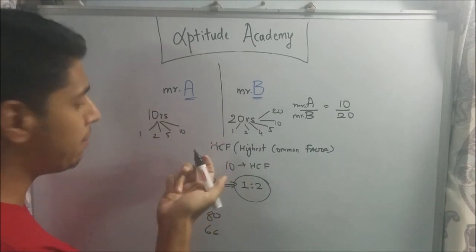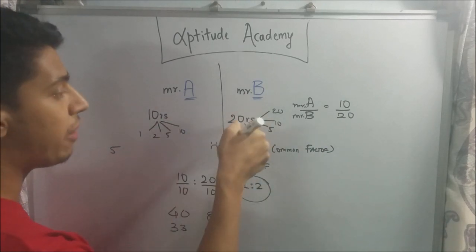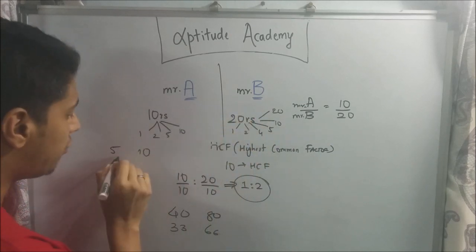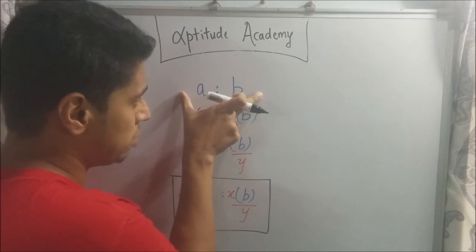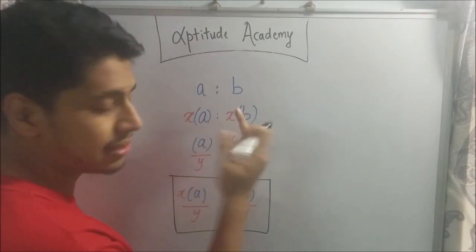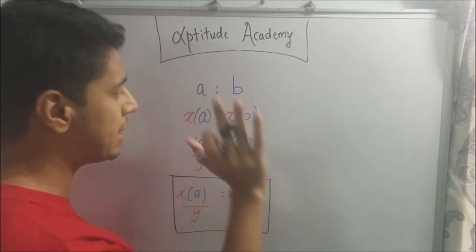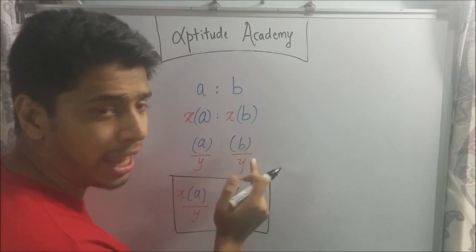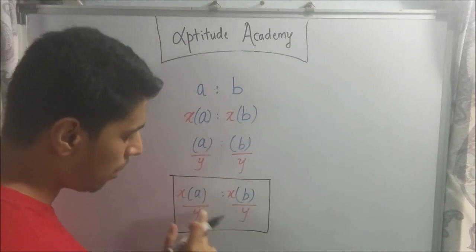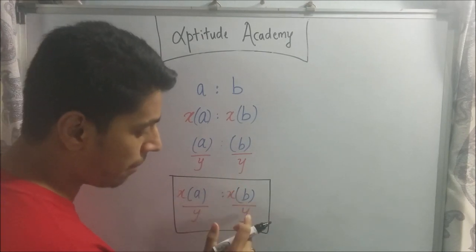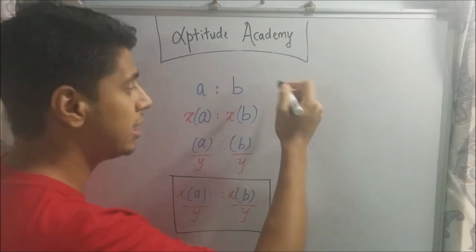Similarly, if I divided 10 by 2, I would get 5. And if I would divide 20 by 2, I would get 10. 5 is to 10 is still 1 is to 2. So, that implies that if you have a ratio A is to B, if you multiply some number X on both the sides, it remains the same. Or if you divide by number Y on both the sides, it's the same.